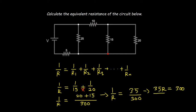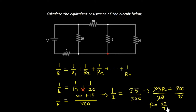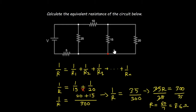Simplifying further with cross multiplication: R times 35 equals 300. Dividing both sides by 35, the 35 cancels out, giving me 300 divided by 35, which equals 60/7. Writing this in one decimal place gives 8.6 ohms. So 8.6 ohms is the equivalent resistance for the 15 ohms and 20 ohms resistors — we can replace them with a single 8.6 ohm resistor.